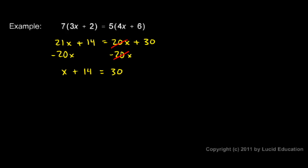So x plus 14 equals 30. Now to solve for x I can subtract 14. And that means I also have to subtract 14 on the other side. On the left side the plus 14 and the minus 14 cancel each other out. So x is now isolated. And on the right I have 30 minus 14 which is 16.